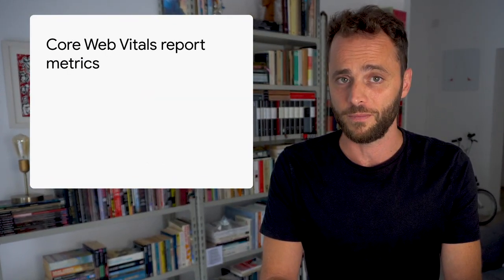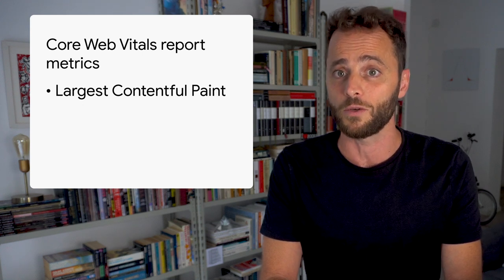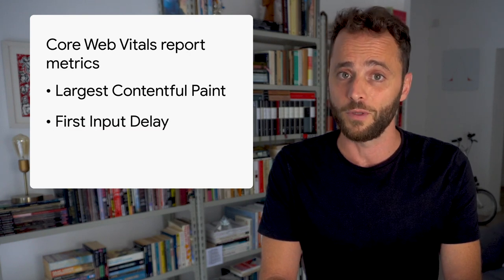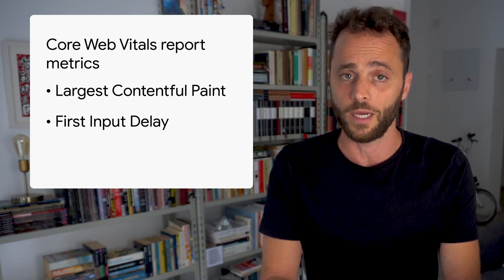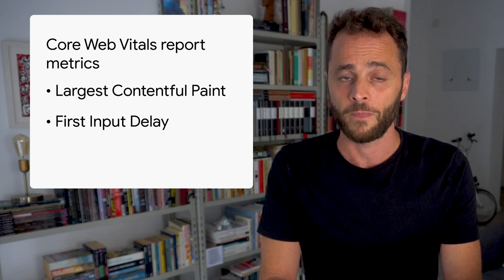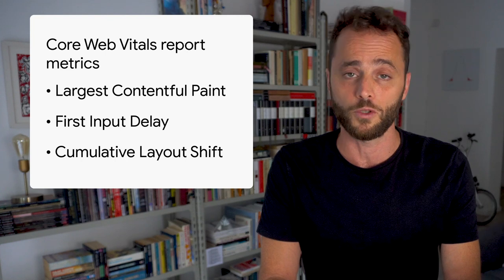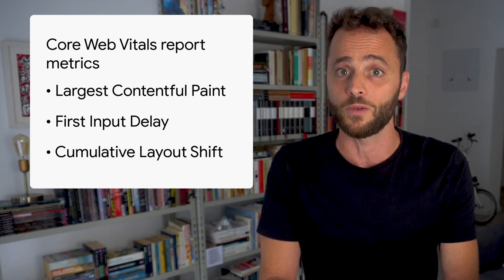The Core Web Vitals report shows how your pages perform based on real-world usage data, sometimes called field data. The report is based on three metrics. LCP, or Largest Contentful Paint, is the amount of time it takes to render the largest content element visible in the viewport, starting from when the user requests the URL — important because it tells the reader that the URL is actually loading. FID, or First Input Delay, is the time from when a user first interacts with your page to the time when the browser responds to that interaction — important on pages where the user needs to do something. CLS, or Cumulative Layout Shift, is the amount that the page layout shifts during the loading phase, scored from 0 to 1, where 0 means no shifting and 1 means the most shifting.